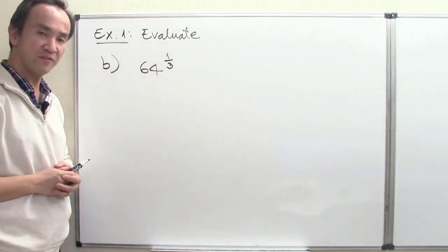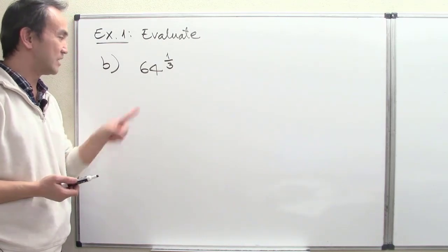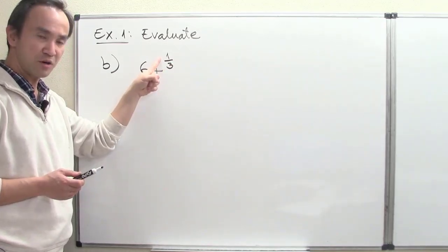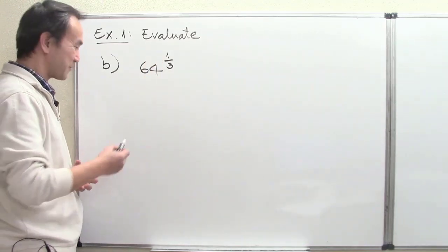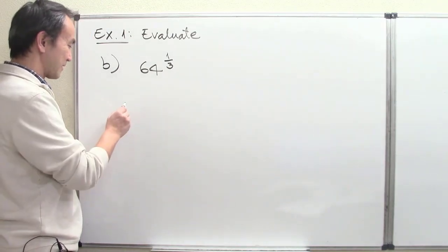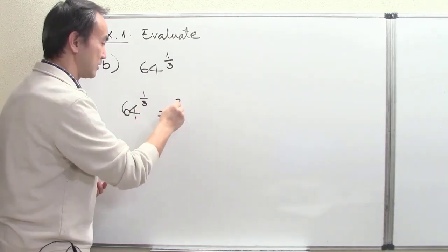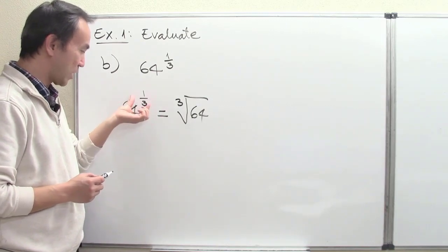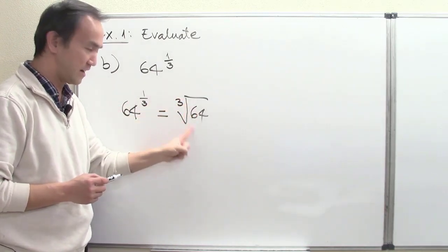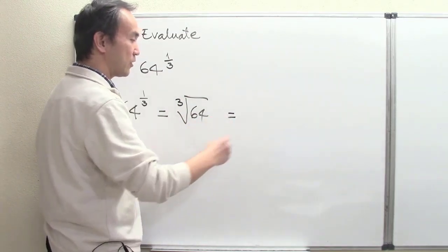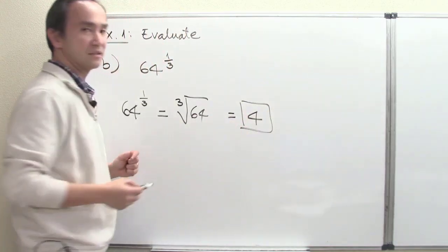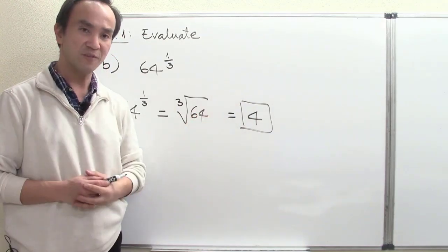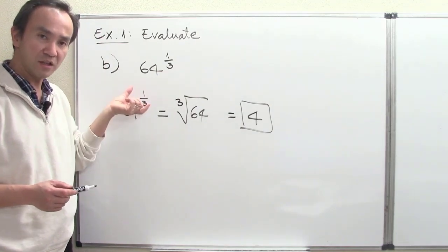Part B: evaluate 64 raised to the 1 third power. The exponent here is a rational number. From our definition, 64 to the 1 third power is understood as the cube root of 64. After expressing it that way, this work is easy — the cube root of 64 is 4. The reason the answer is 4 is simply because 4 raised to the third power equals 64. That's how we evaluate 64 to the 1 third as a rational exponent.